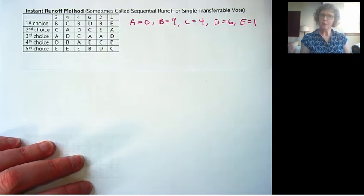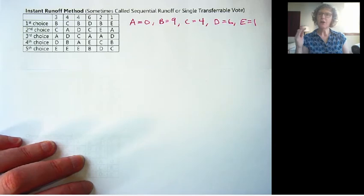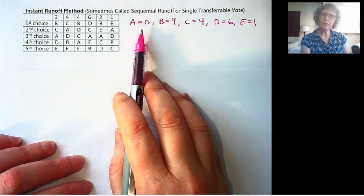Okay, so now what we do, instead of just taking, okay, B won, we're done - we want to consider all of the rankings. So we eliminate the person with the least votes first. Okay, so let's write this down. Eliminate the candidate with the least votes.